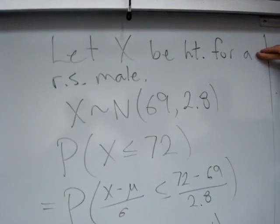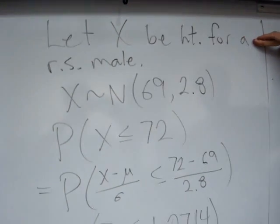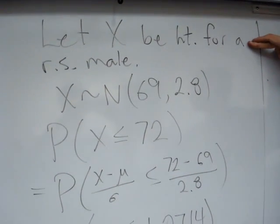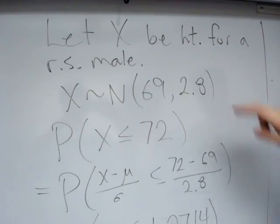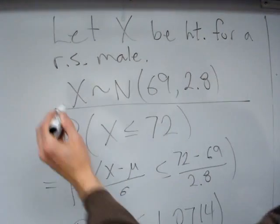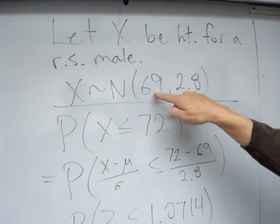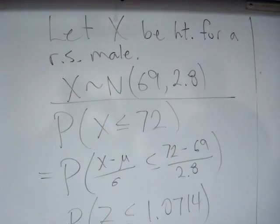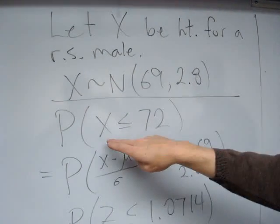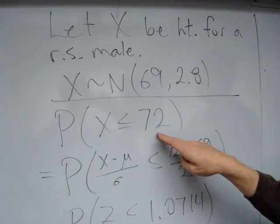So what we do here is we define a random variable first. We let X be the height for a randomly selected male, and that's the way we want to start. And we want to write down what we know about its distribution. So X is normal, this is how we designate that it's normal, mean 69 standard deviation of 2.8. And what we want to find is the probability that X is less than or equal to 72.